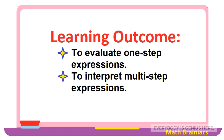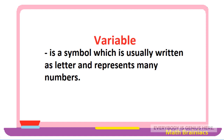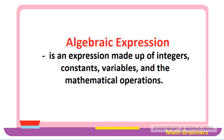Algebra is a system of mathematics where letters and symbols are used to represent quantities written as formulas and equations. A variable is a symbol, which is usually written as a letter, and represents many numbers. An algebraic expression is an expression made up of integers, constants, variables, and the mathematical operations — addition, subtraction, multiplication, and division.